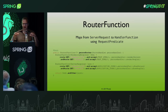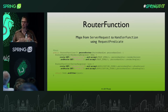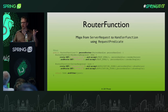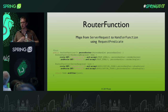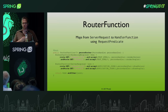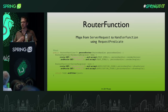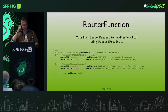If the handler function is the method itself that handles your request, then the router function is basically everything we do with the annotations in Spring MVC — request mapping, both on the method level and on the type level. That's the responsibility of a router function: it maps from a request to the handler function. So it's an extra step of indirection.